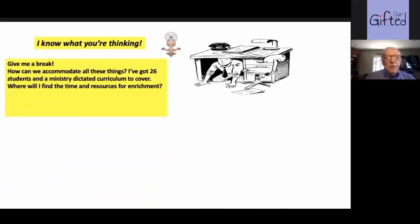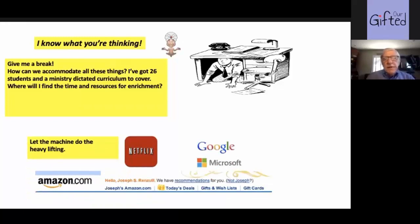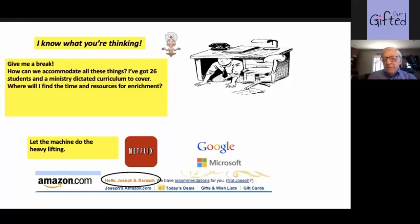I know what you're thinking: give me a break, how can we accommodate all these things? I've got 26 kids and a curriculum to cover. Let's take an example from very successful companies like Google, Microsoft, and Amazon. Do you know that almost every couple of days I get a personal letter from Amazon? Hello, Dr. Joseph Renzulli. How do they know what to send me out of billions of products? Very simple — they have my profile; they know what I have purchased in the past. So they will send me like-minded books or furniture or food or whatever I choose to buy.